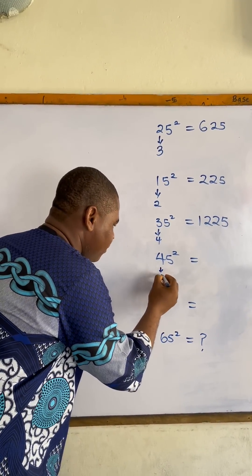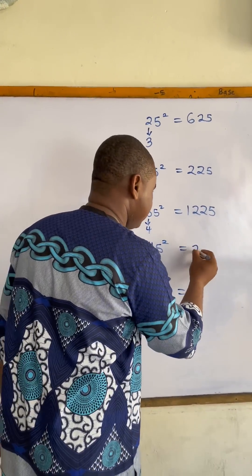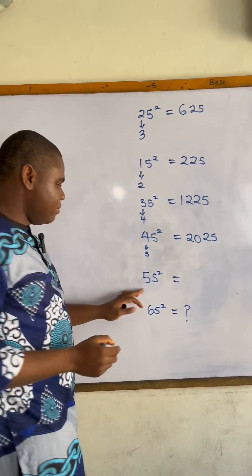Next one we have 45. So the next number after four is five, so four times five is twenty, five squared is twenty-five. So 45 squared equals 2025.